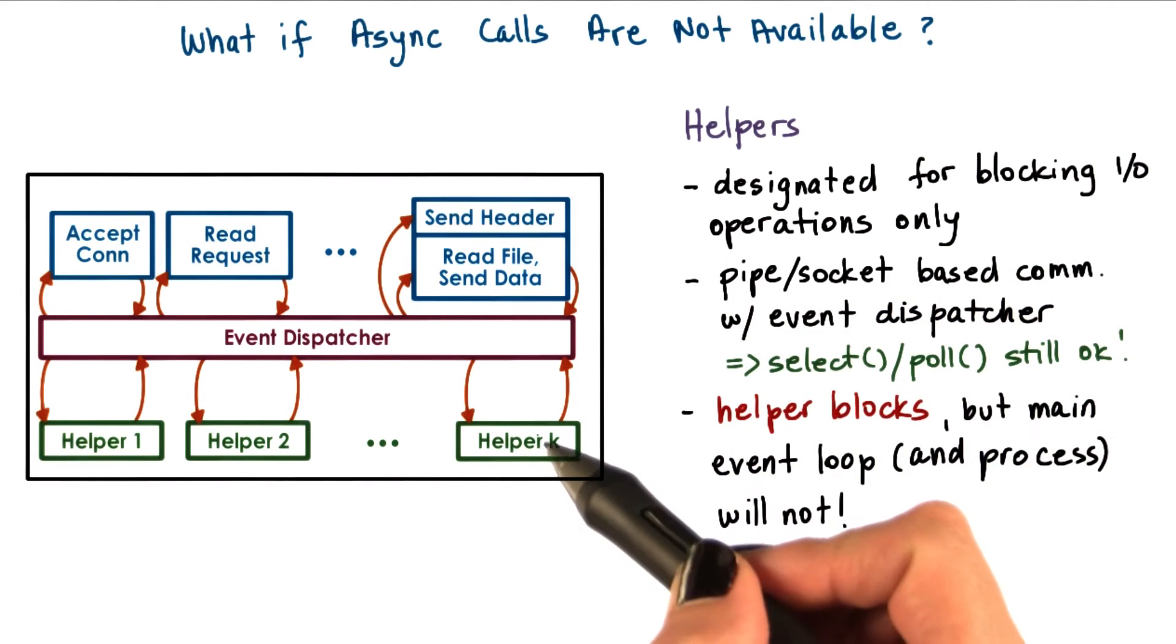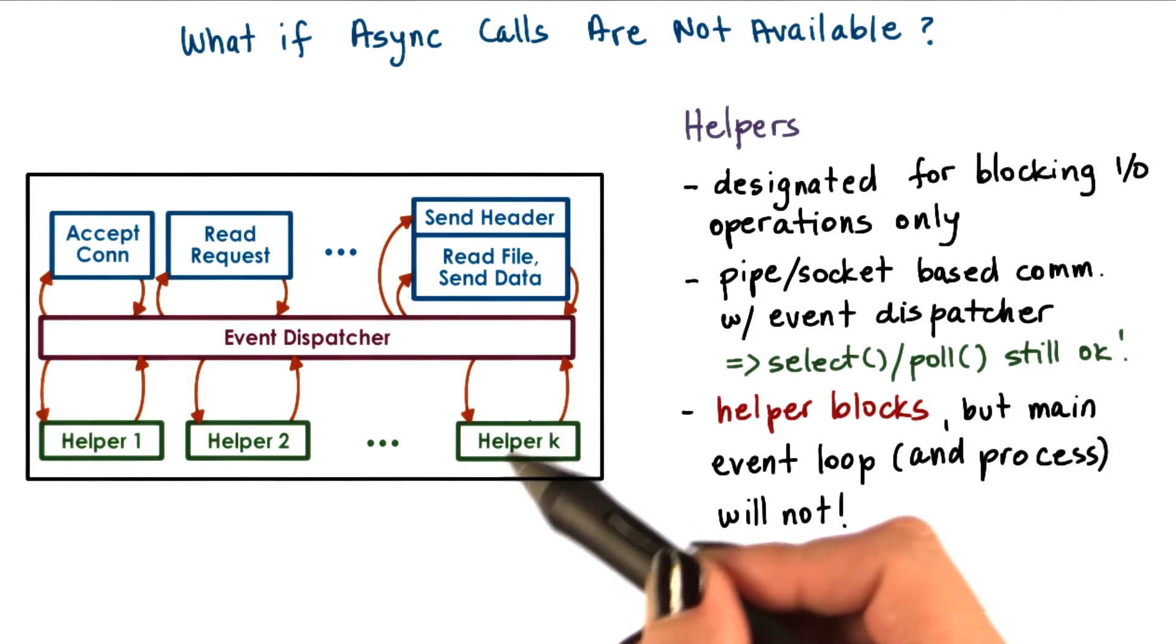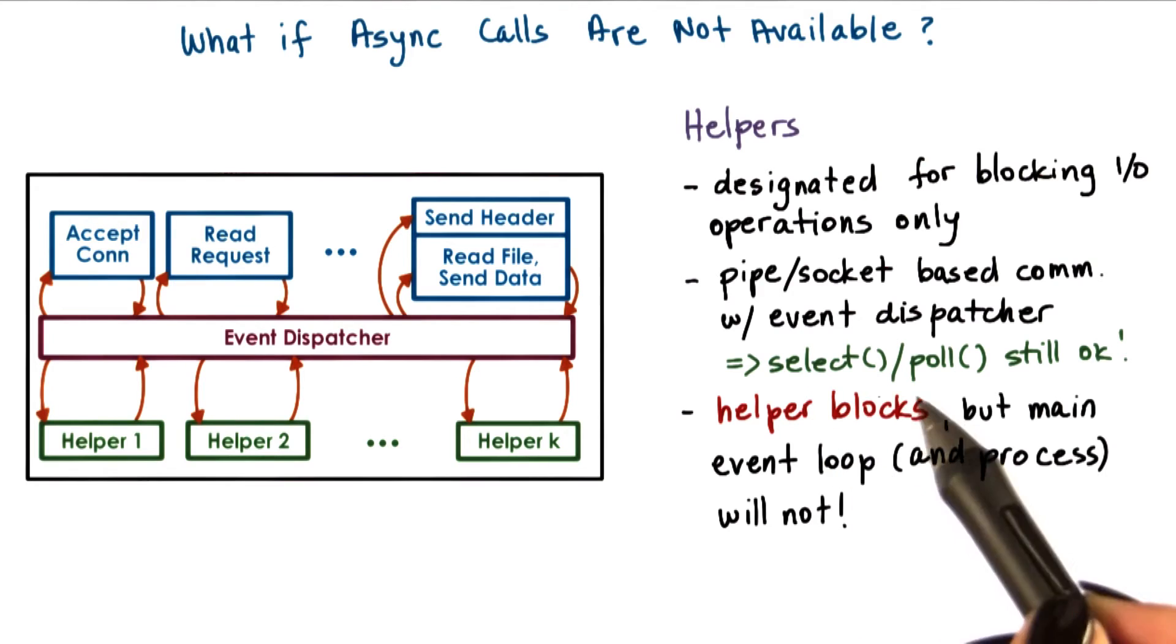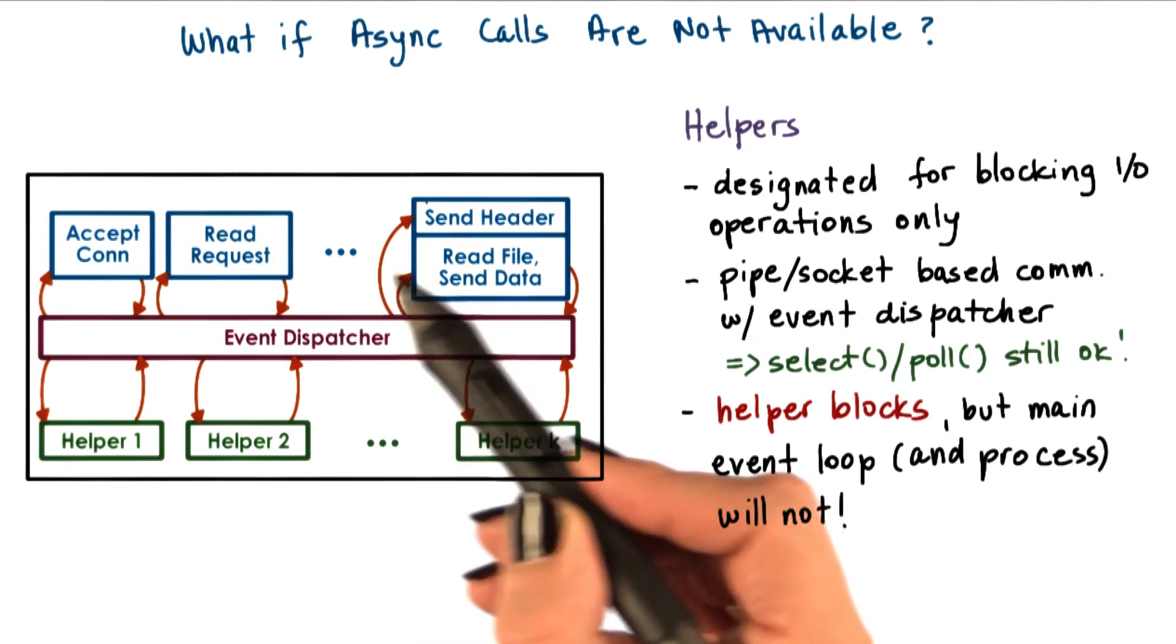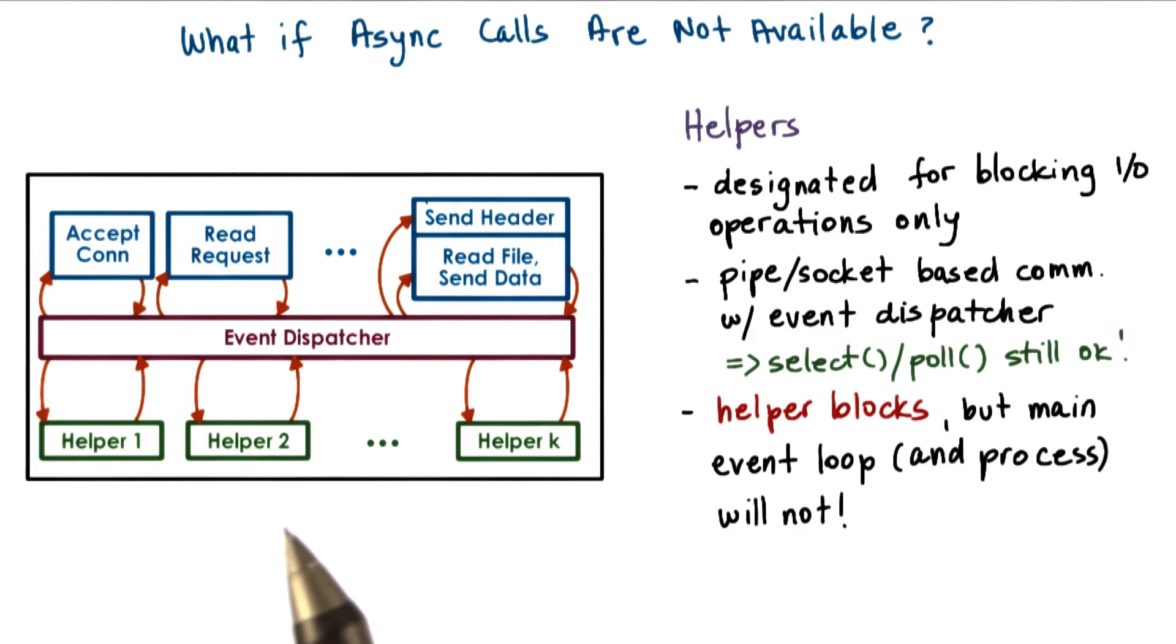This interface can be used to track whether the helpers are providing any kind of events to the event dispatcher. In doing this, the synchronous IO call is handled by the helper. The helper will be the one that will block, and the main event dispatcher and the main process will continue uninterrupted.